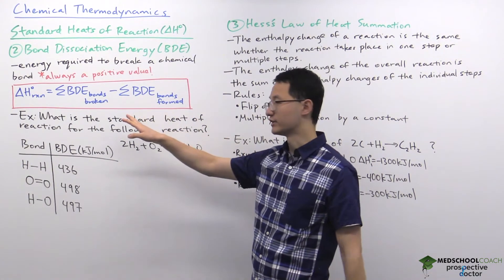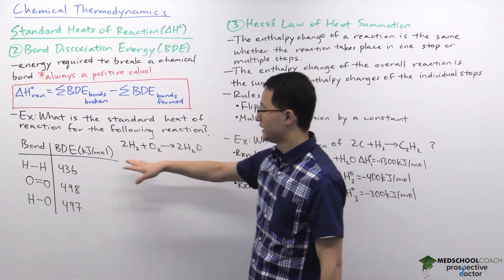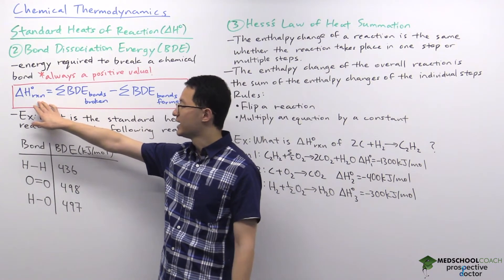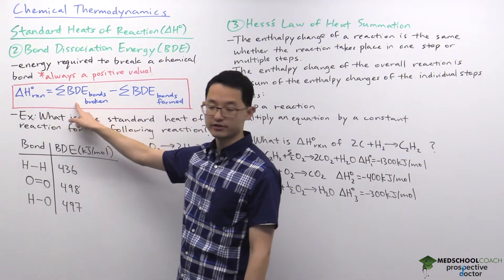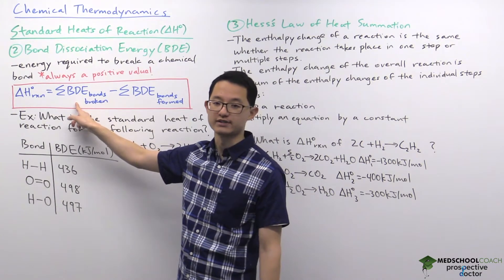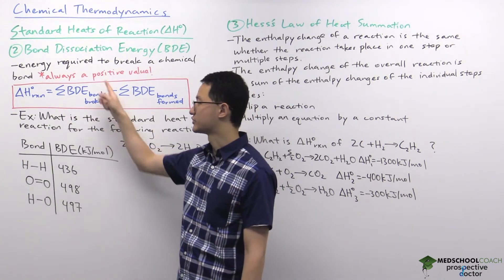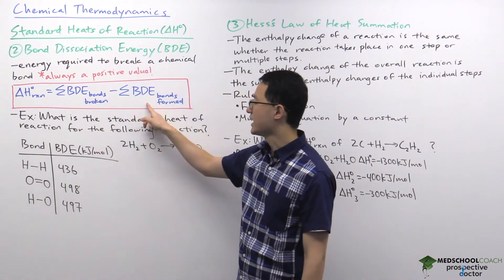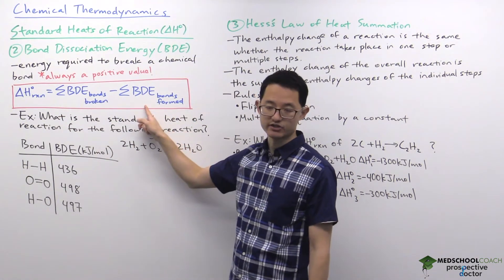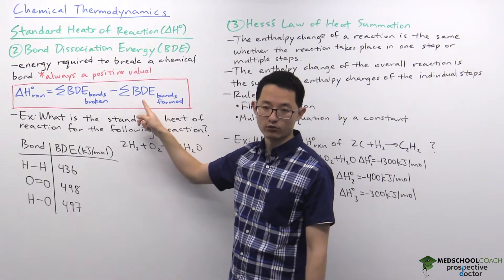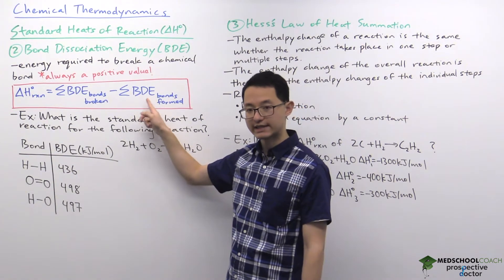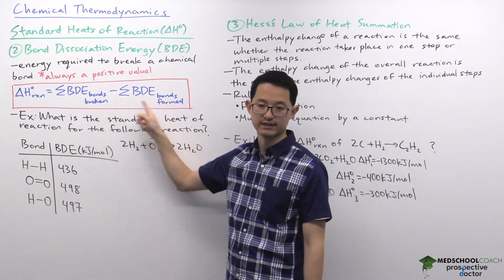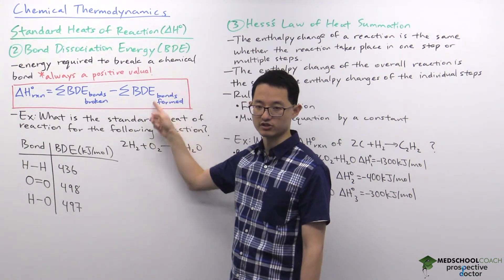Here's the equation we can use. You calculate the enthalpy change, or heat of reaction, by adding up the bond dissociation energies of all the bonds that you're breaking — this requires energy so it's a positive value — and then subtracting the bond dissociation energies of all the bonds that you're forming. Forming bonds releases energy, so subtracting these bond dissociation energies gives the correct sign.